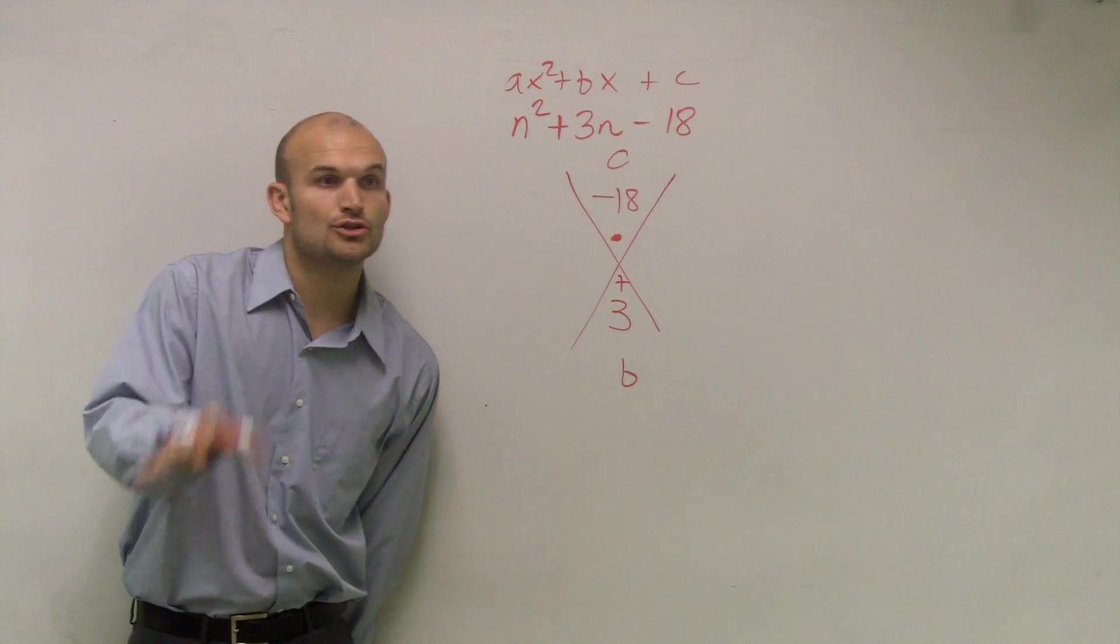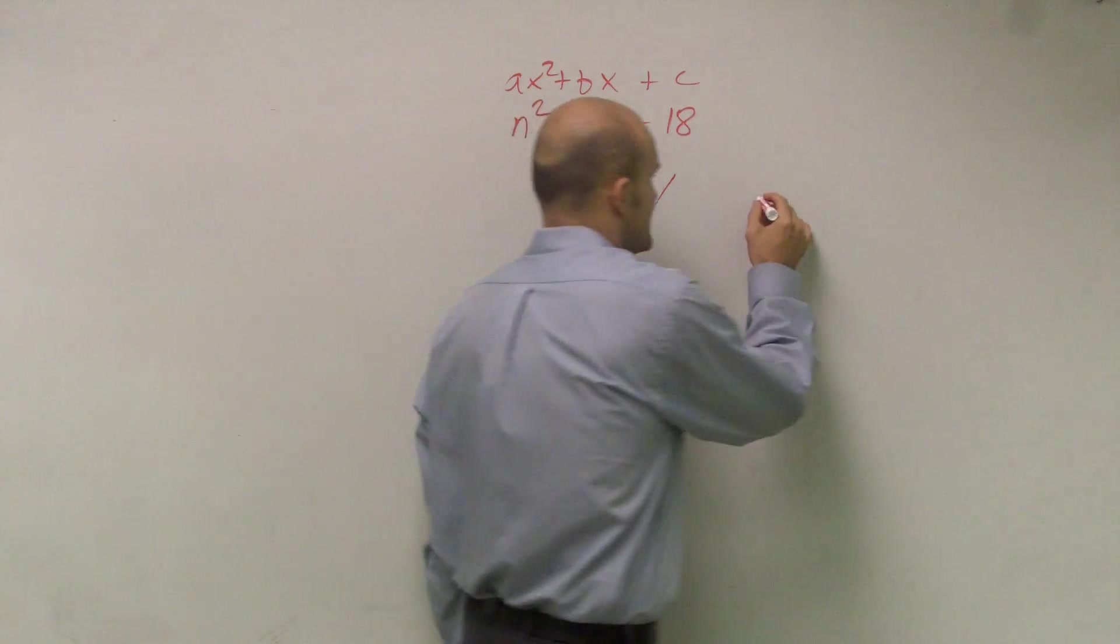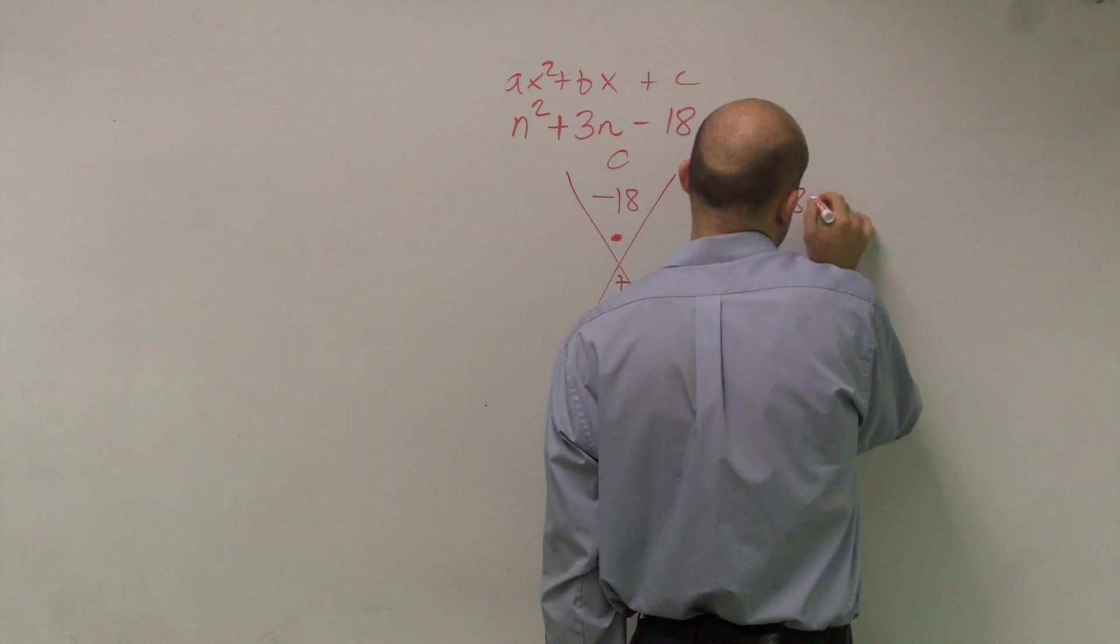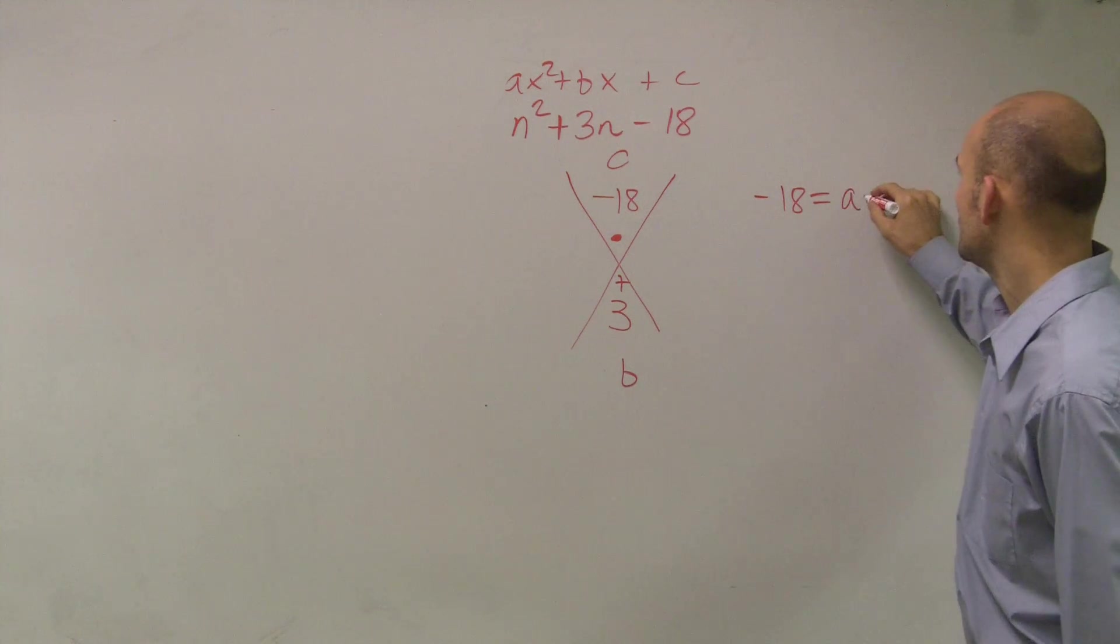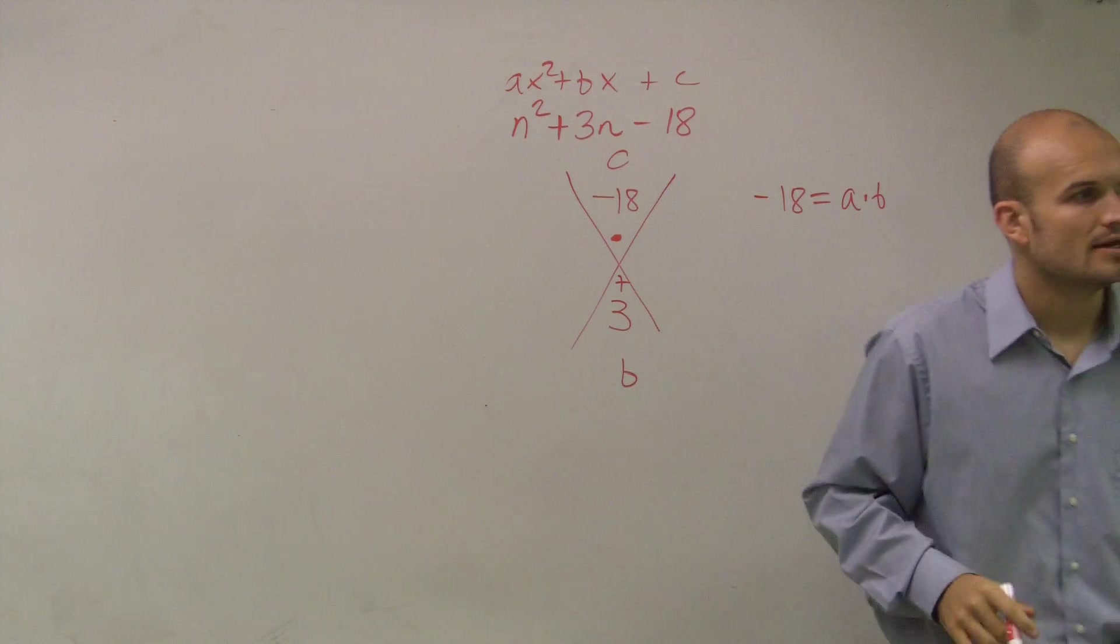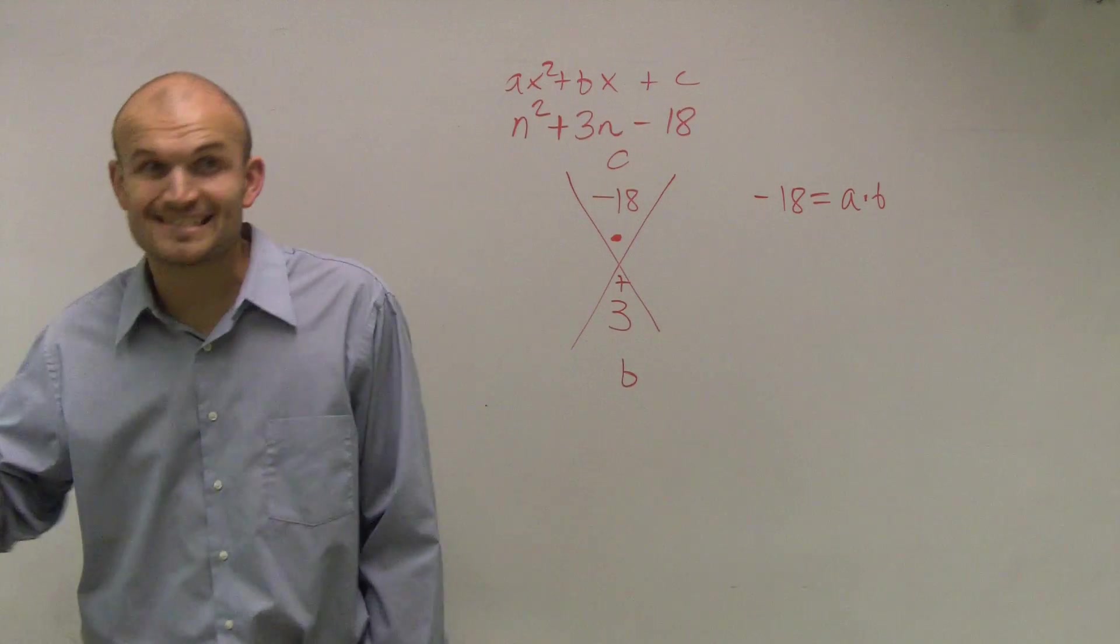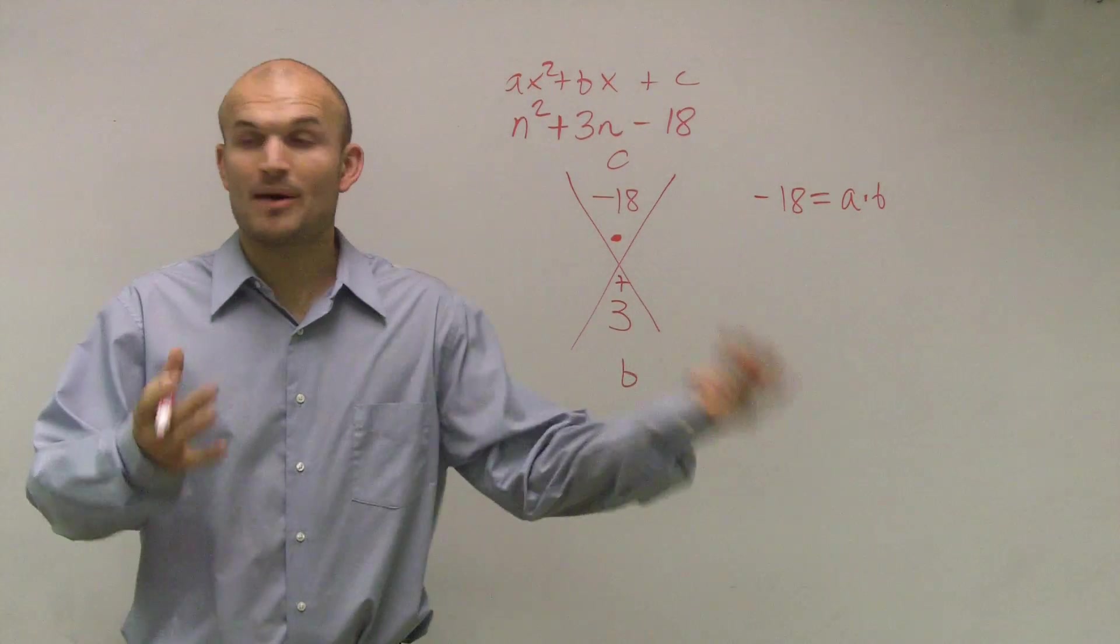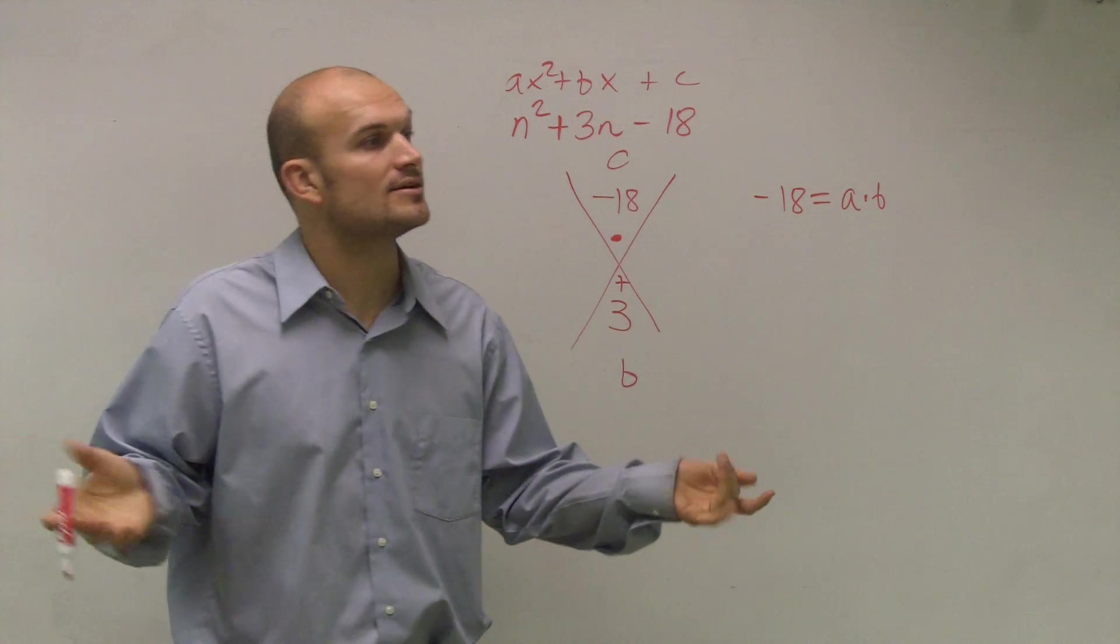So no longer do both of my factors have to be positive. So now I look at negative 18 and I say, what two numbers multiply to give me negative 18? And remember, for it to be negative, one of those factors has to be negative, because a positive times a positive gives you a positive, and a negative times a negative is going to also give you a positive.